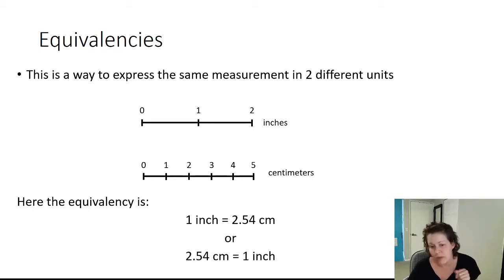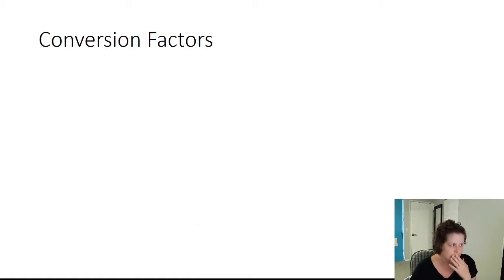This is something that's kind of hard for students to grasp, but it doesn't matter which way we think about it. It's still the same. One inch is 2.54 centimeters is the same as 2.54 centimeters is equal to one inch. They're equivalent. They are the same length. They're just different units. So those are what equivalencies are.